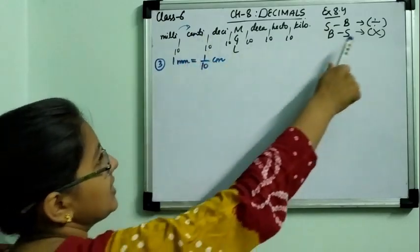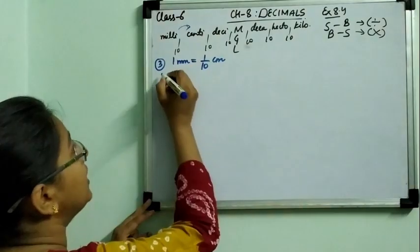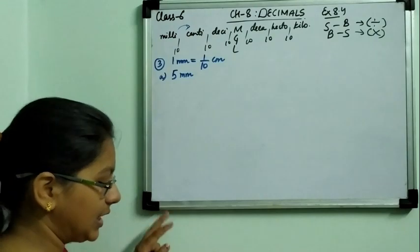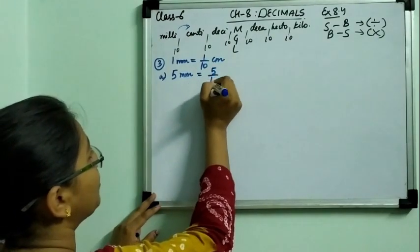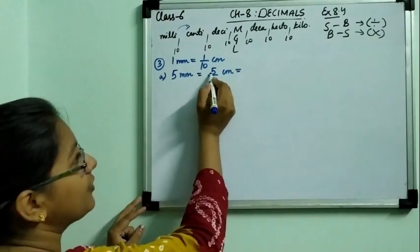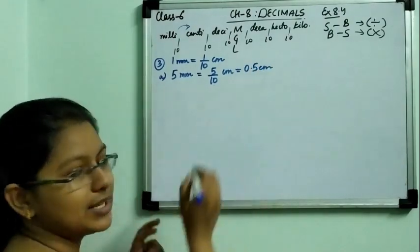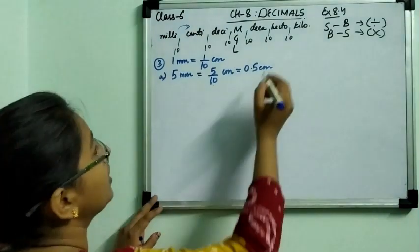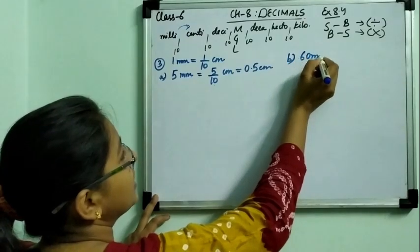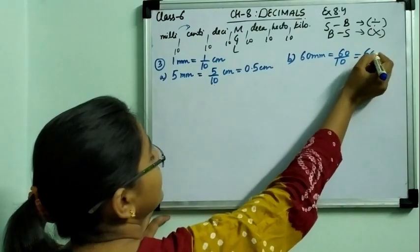Very simple — small to big so we divide. In part A it is 5 millimetre. To convert 5 millimetre to centimetre: 5 upon 10. There is one zero, so from the right side after one digit we place the decimal — that gives 0.5 centimetre. Similarly in part B it is 60 millimetre. So 60 divided by 10 equals 6 centimetre.